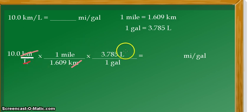So we need to cancel them out. We are now left with the desired units, miles per gallon. So we now do the calculation to give us our answer, which is equal to 23.523 miles per gallon.